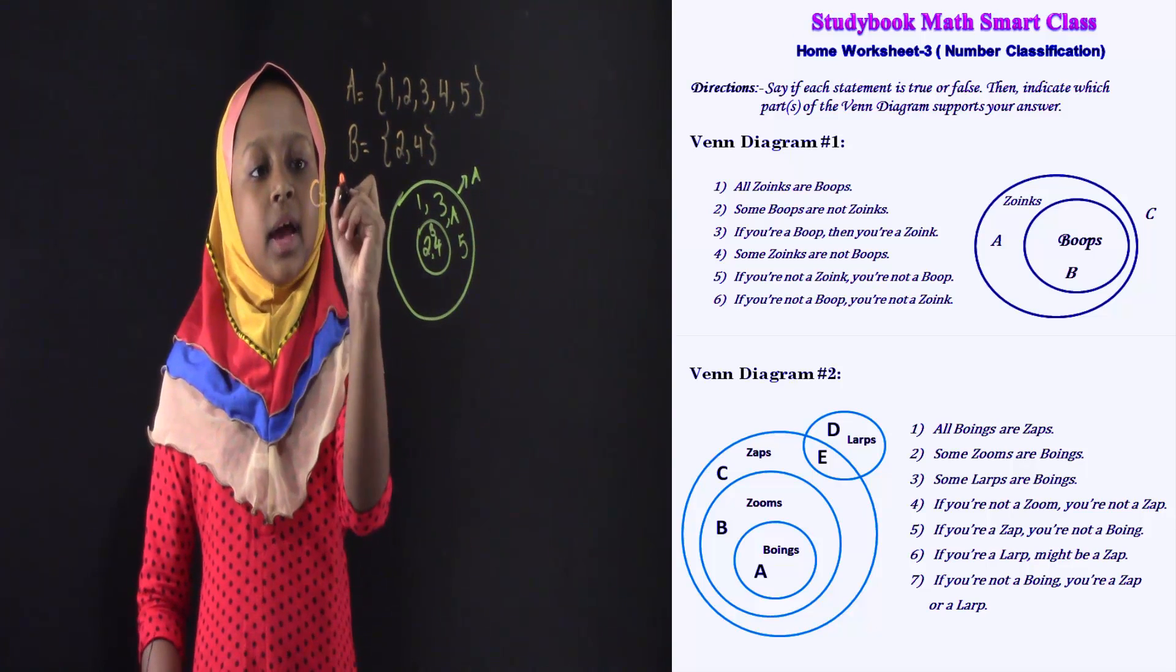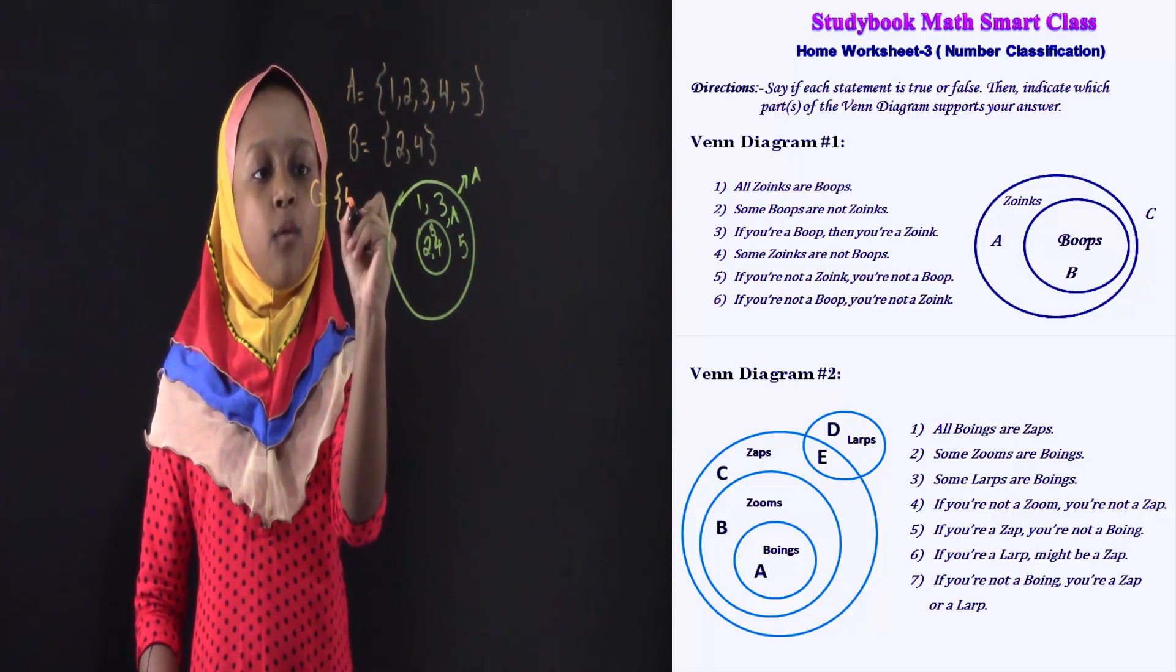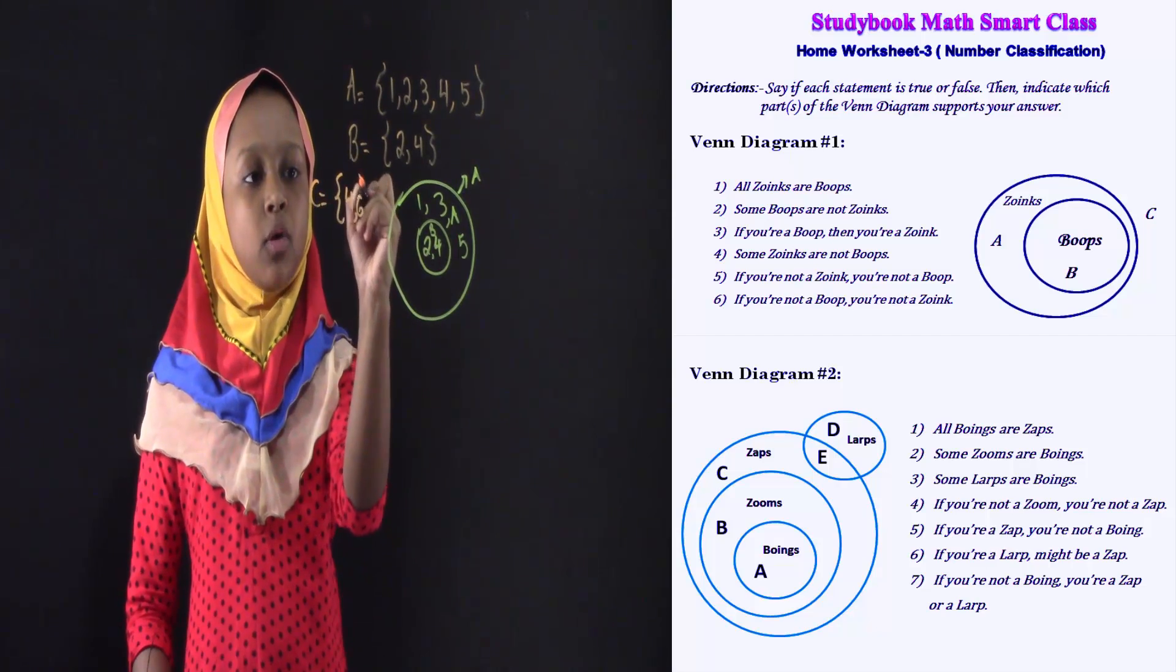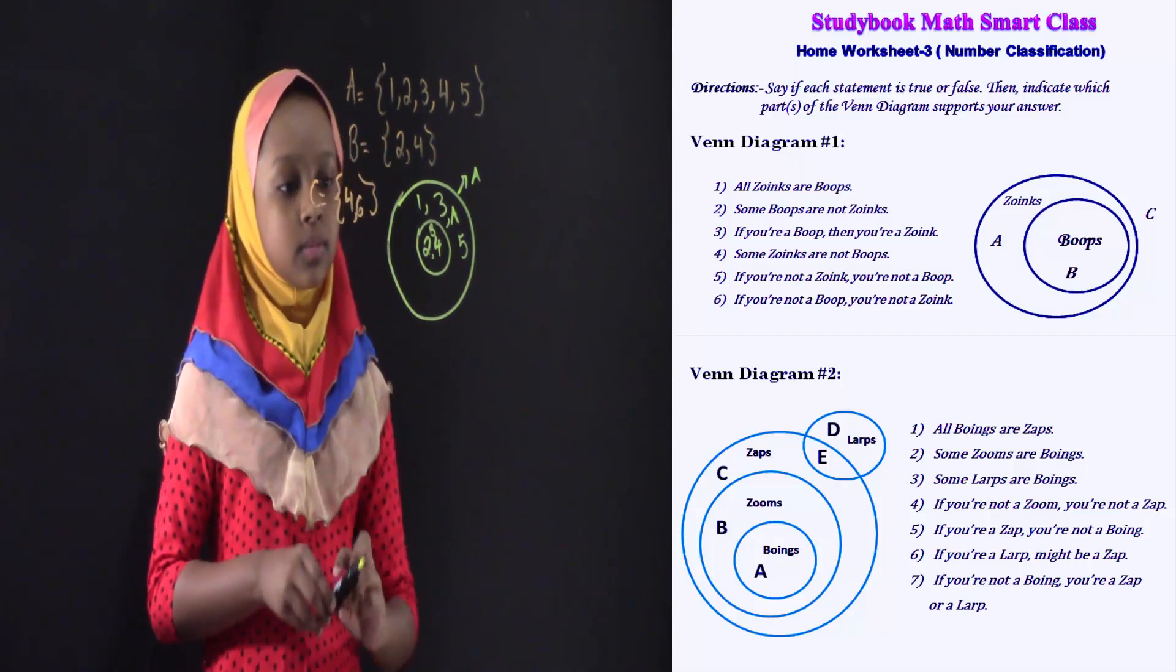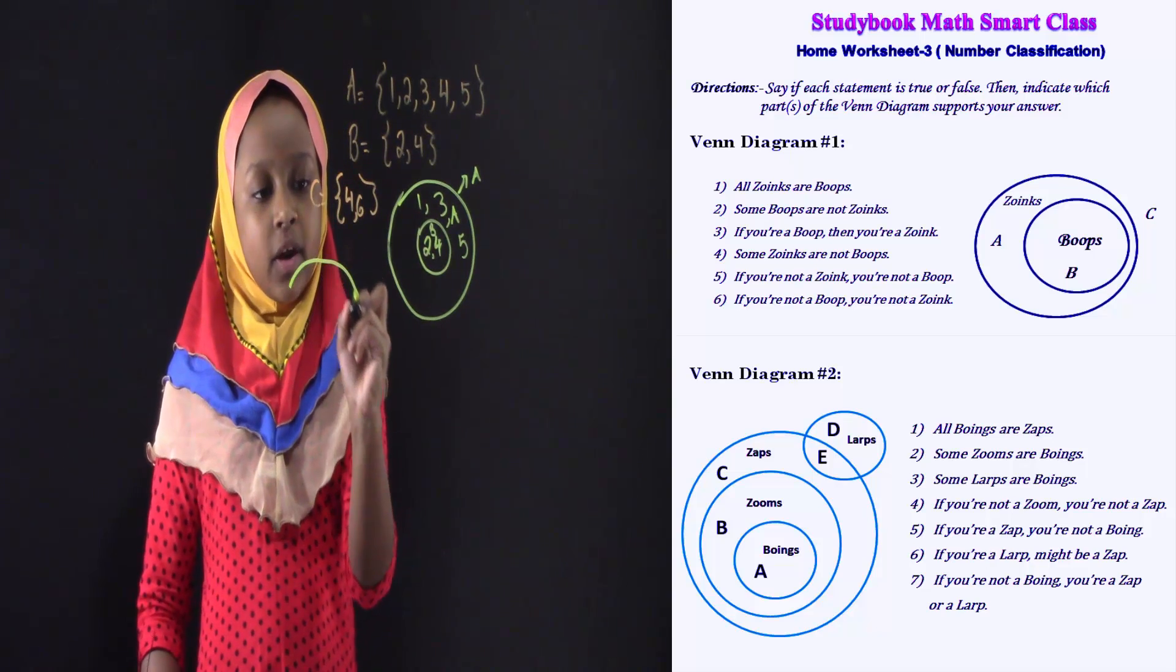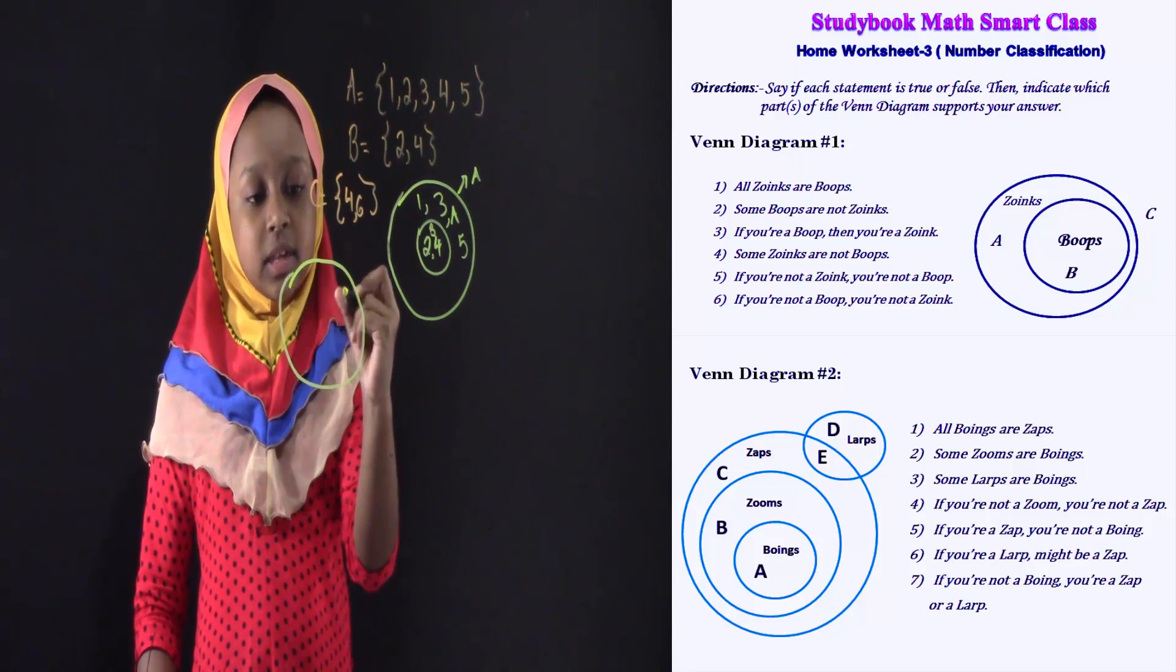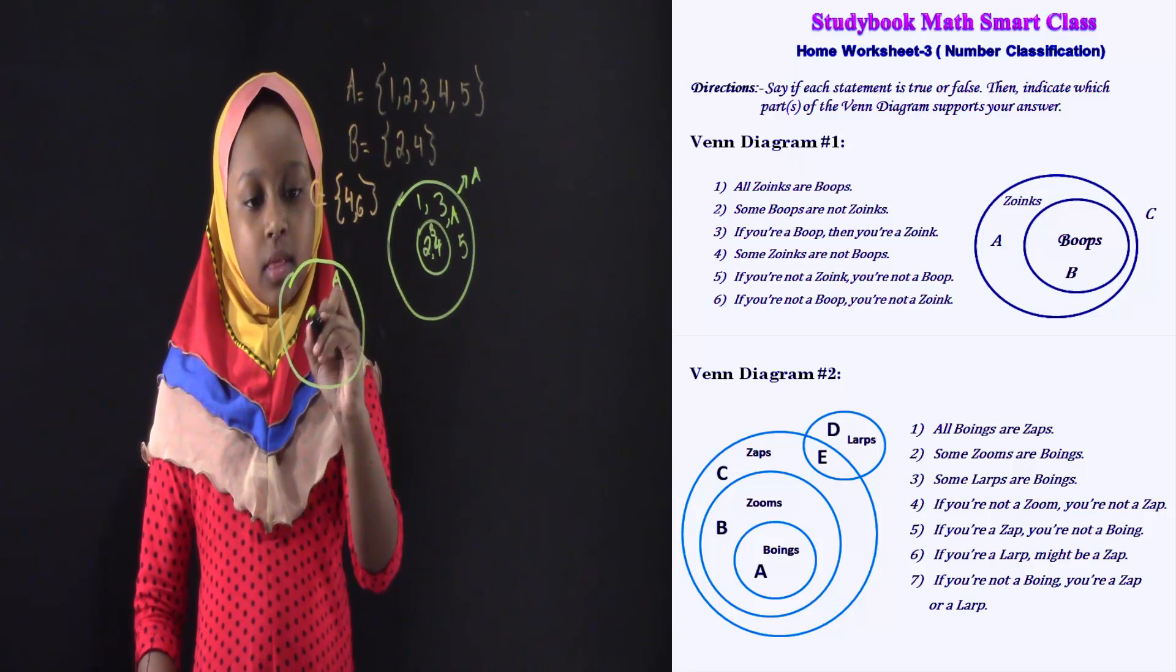For set C, inside set C, I'm going to write four and six. And I'm going to draw here another Venn diagram. Suppose, over here, I'm going to draw. This is A, and this is B.